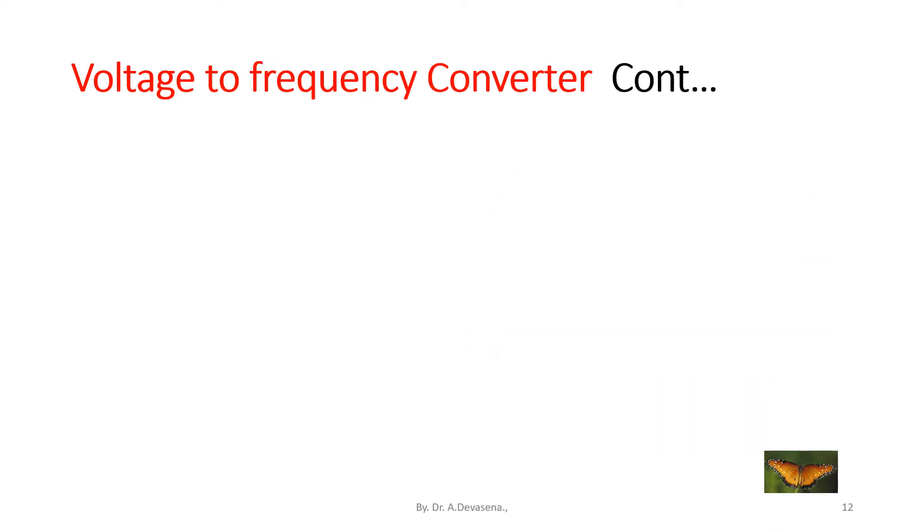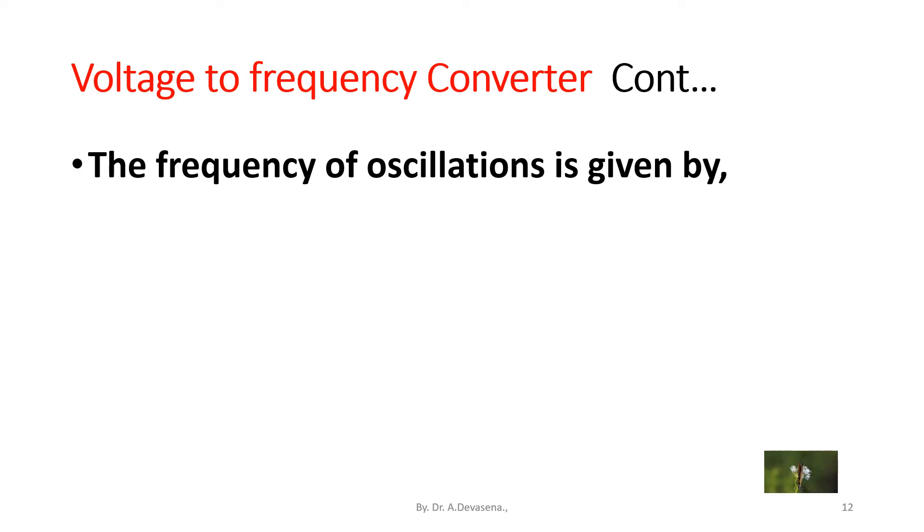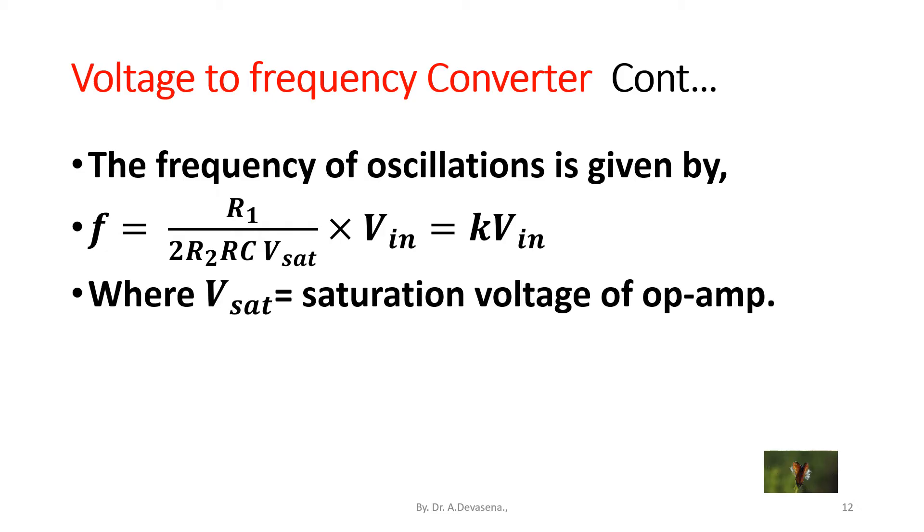The frequency of oscillations is given by F equals R1 divided by 2R2RC V_sat times V_IN, that is equal to K times V_IN, where V_sat is the saturation voltage of op-amp.